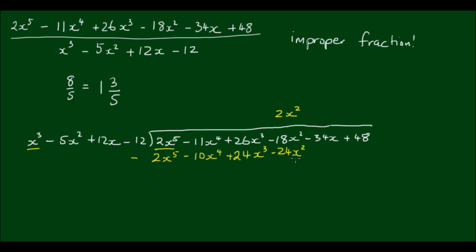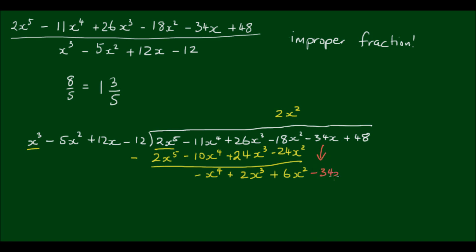Then I subtract this new line from the line above. The first term cancels out. Negative 11x to the 4th minus negative 10x to the 4th is negative x to the 4th. Positive 26x cubed minus 24x cubed is positive 2x cubed. And negative 18x squared minus negative 24x squared is positive 6x squared. The next step is to bring down the negative 34x, and this new line becomes my new dividend.